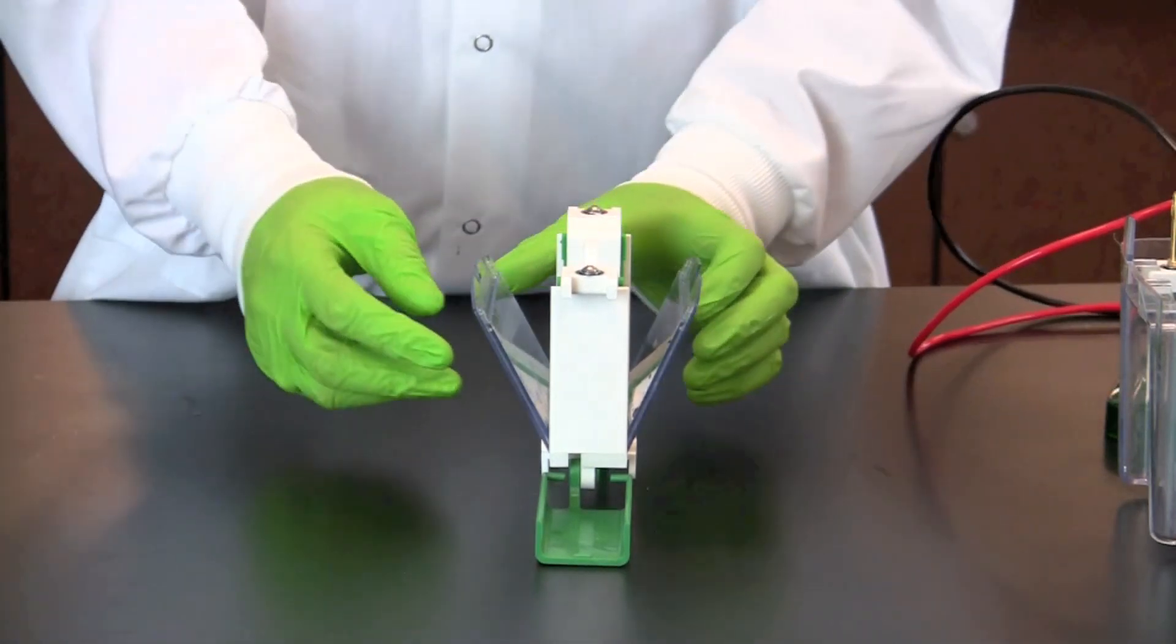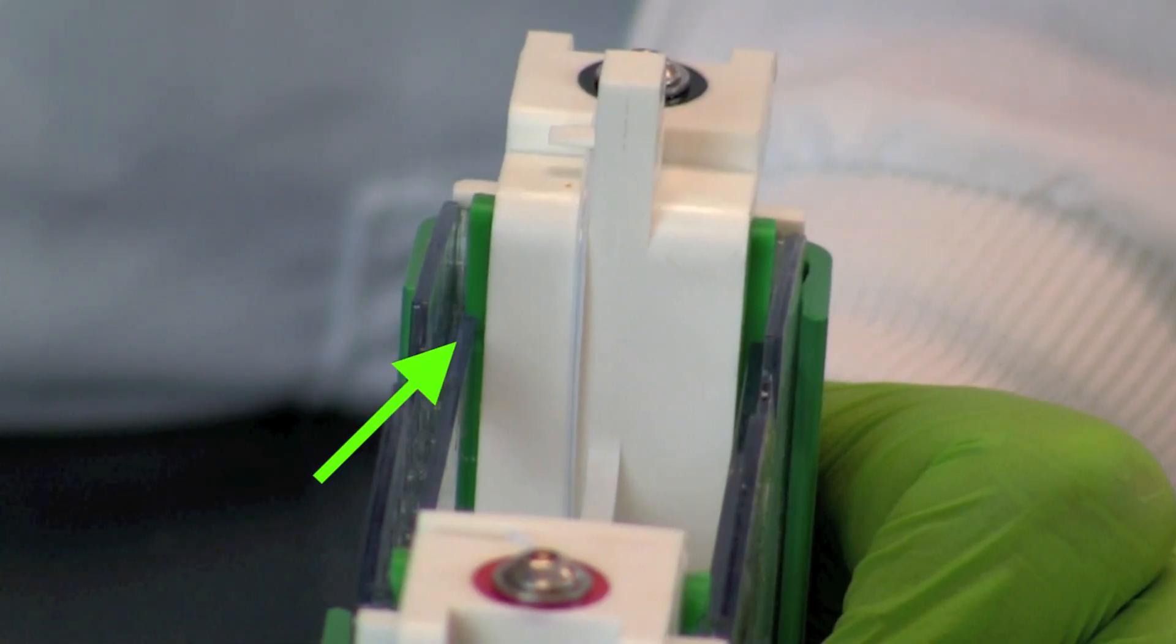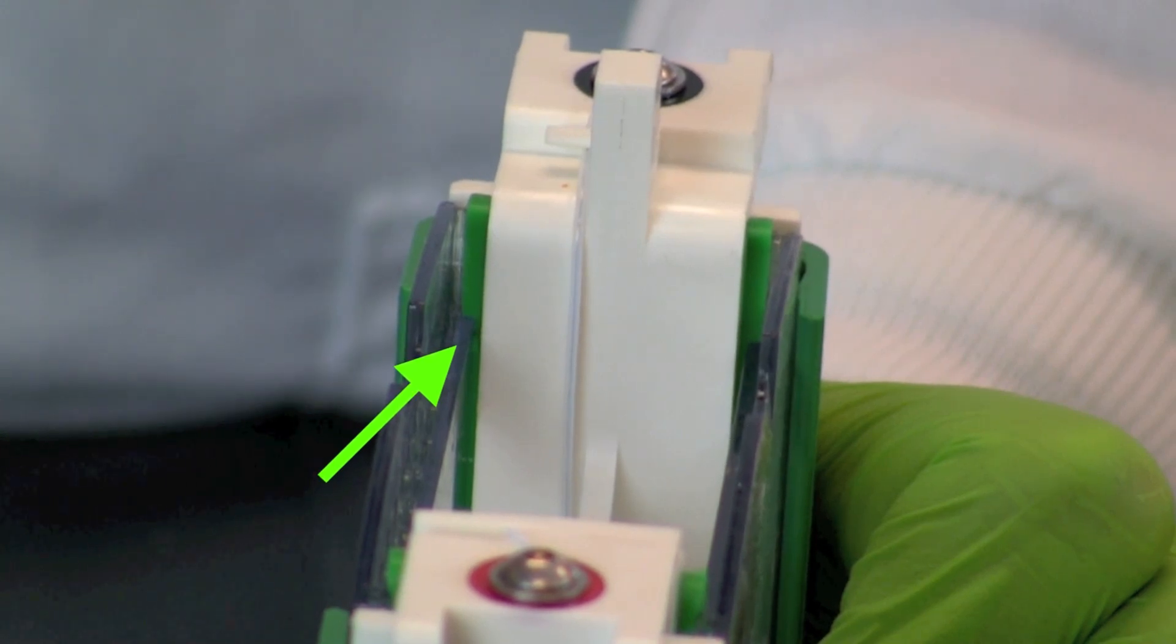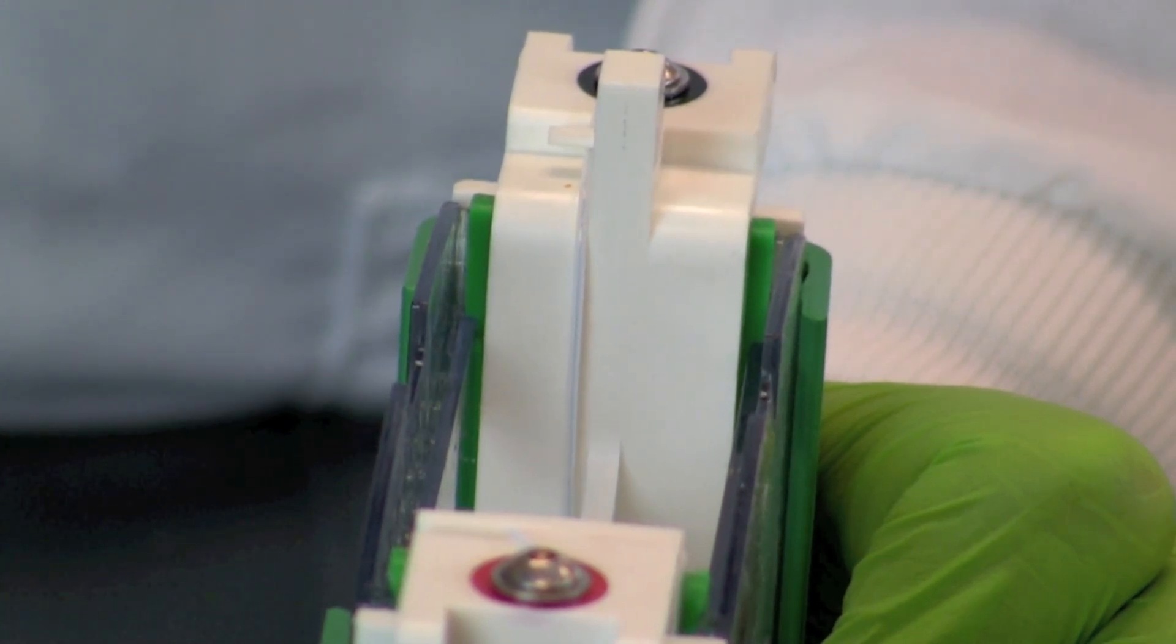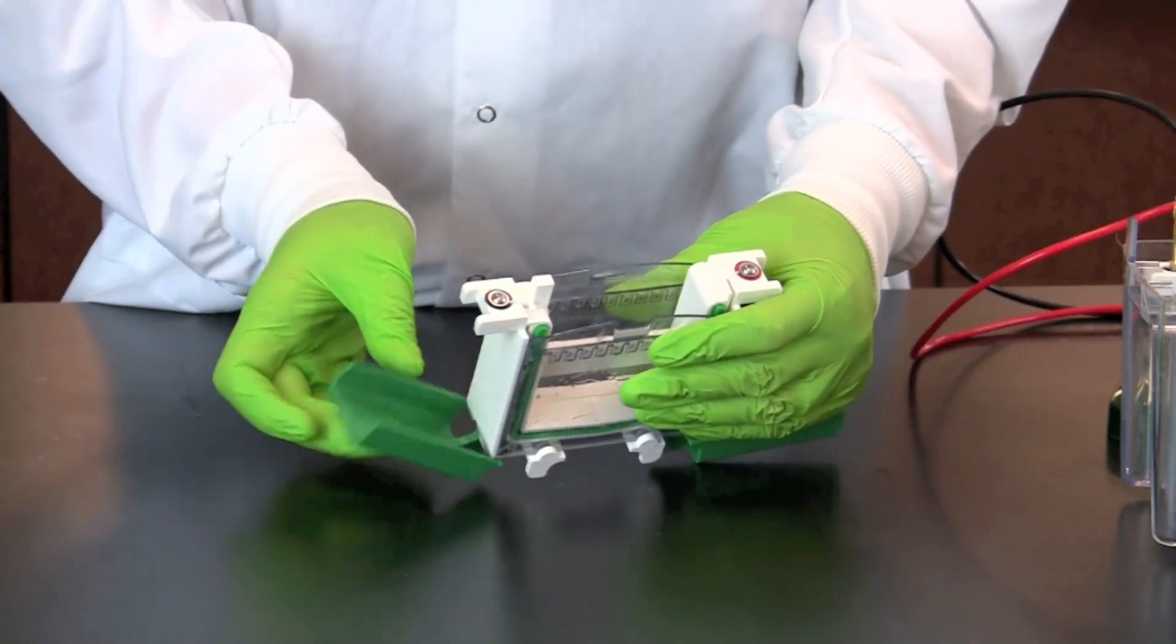Push the gels toward each other, making sure they are flush against the notched green gaskets, and that the short plates sit just below the notches of the gasket. Lock the green clamps over the gels.